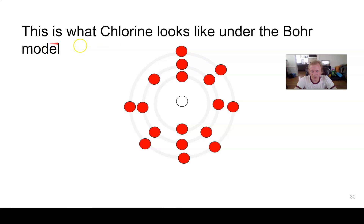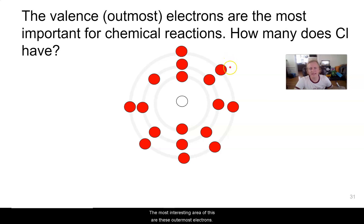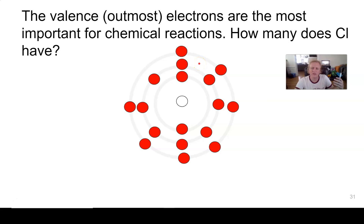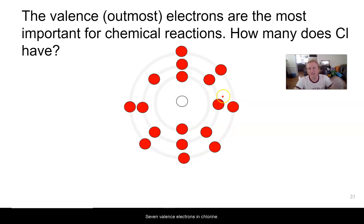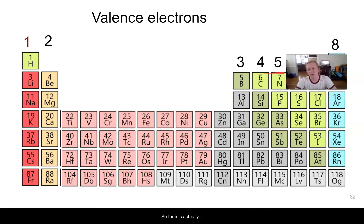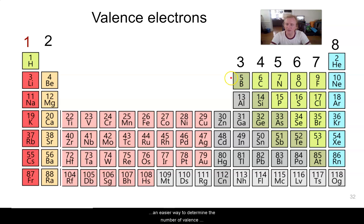The most interesting part of this are the outermost electrons — these are going to determine what kind of reactions this chlorine atom is going to undergo. These are called the valence electrons. Please write that down because valence is a term you're going to need to know. Valence electrons determine the chemical reactions that chlorine is going to have. How many valence electrons do we have here? We have seven. There's actually an easier way to determine the number of valence electrons than drawing it out every single time.